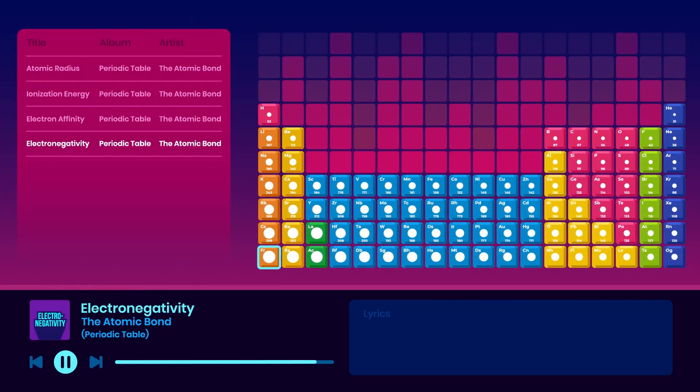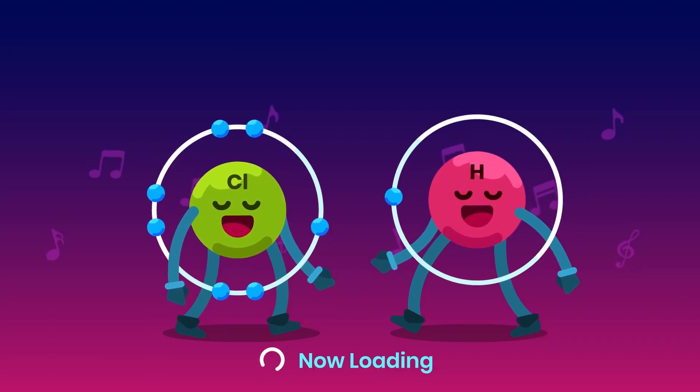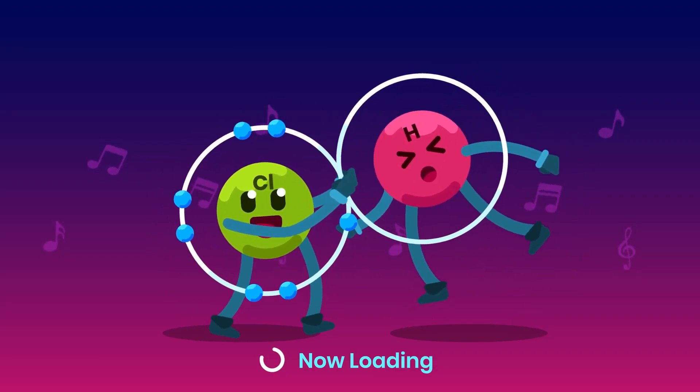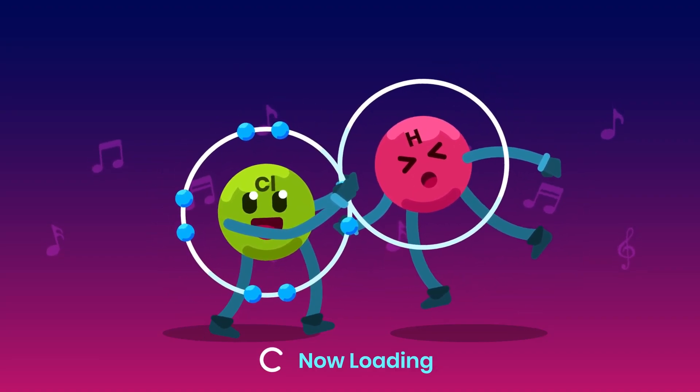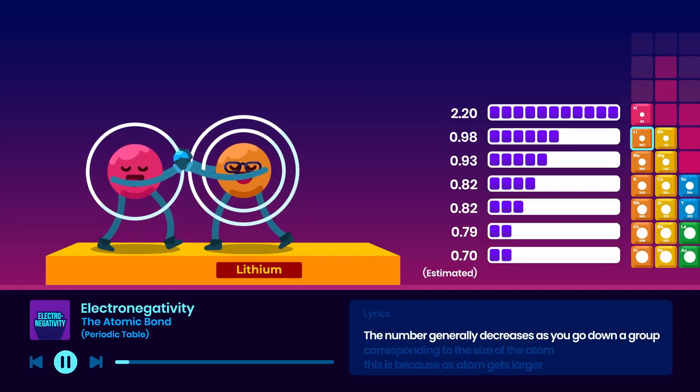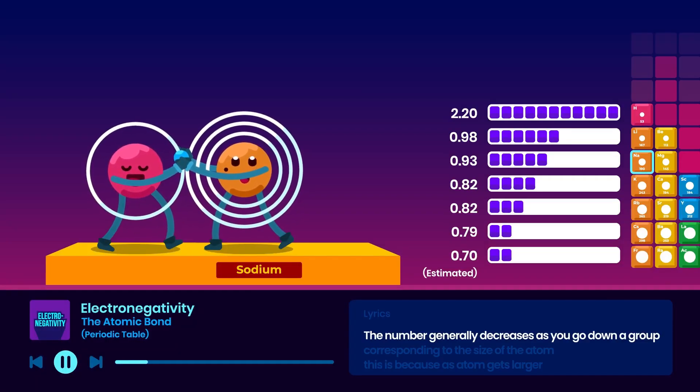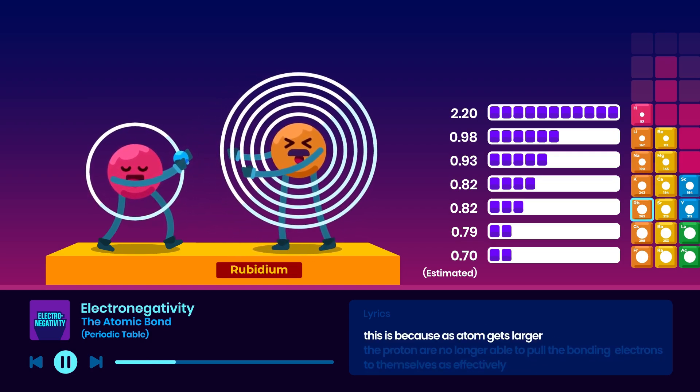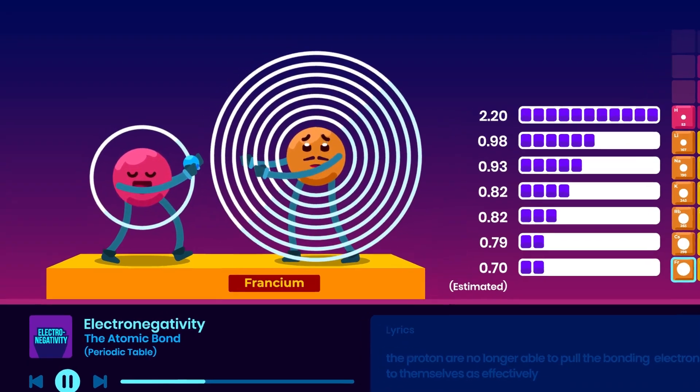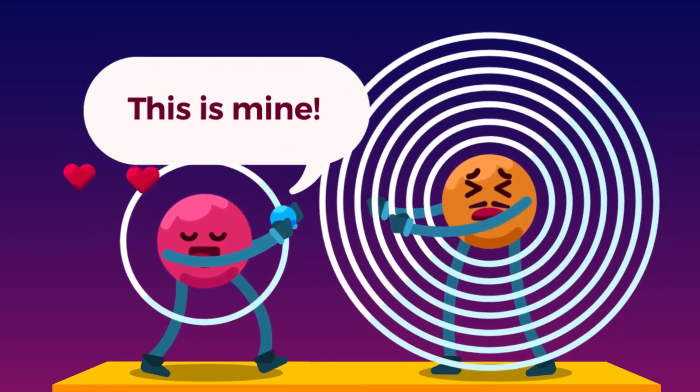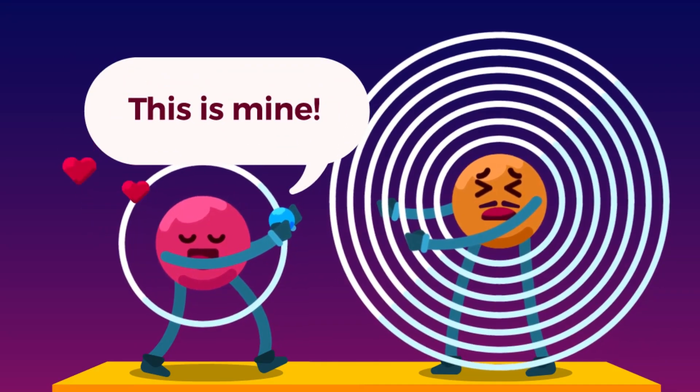The final trend, electronegativity, is the ability of an atom to hold onto its bonding electrons in a covalent bond. And just like the ionization energy and the electron affinity, the number generally decreases as you go down a group, corresponding to the size of the atom. This is because as atoms get larger, the protons are no longer able to pull the bonding electrons to themselves as effectively.